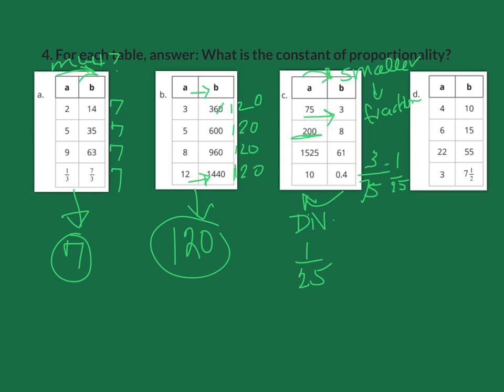Let's see if it works here. 200 times 1 over 25. How many 25s are in 200? Think about $2. How many quarters are in there? It is 8. So it also works. 1525 divided by 25 is 61. And 10 divided by 25 is 0.4. For this one, our constant of proportionality is 1 over 25.